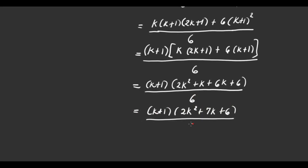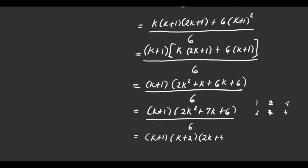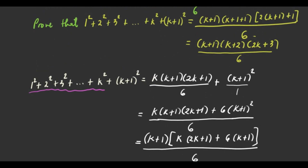So we have (k plus 1) times (2k squared plus 7k plus 6) over 6. The quadratic 2k squared plus 7k plus 6 is factorable. Checking the factors: it factors as (k plus 2) times (2k plus 3). So we have (k plus 1) times (k plus 2) times (2k plus 3) over 6. Comparing with what we wanted to show — (k plus 1)(k plus 2)(2k plus 3) over 6 — they match.